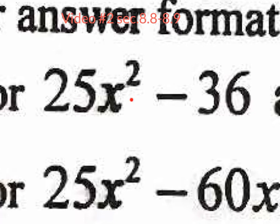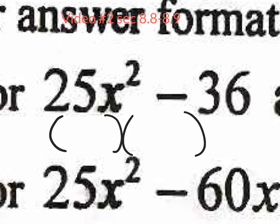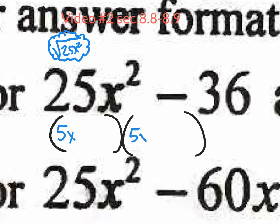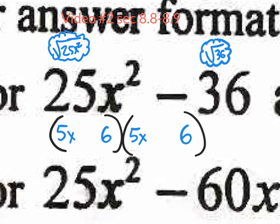Let me repeat that. If you have a perfect square term in the front and a perfect square term in the back, you might be able to do a shortcut by applying square roots. We know our answer is going to be a binomial times a binomial. If I were to do the square root of 25x squared in my head, what do I get? 5x. So I'm going to put a 5x right here and a 5x right here. And if I do the square root of 36, I get 6. So I'm going to put a 6 right here and a 6 right there. Now we still need symbols — either plus-plus, minus-minus, or different signs.